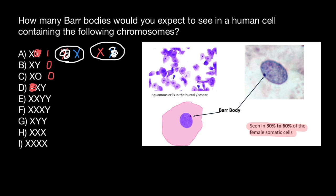Next, we see a male with two Y chromosomes and two X chromosomes (XXYY). Again, one X chromosome is going to form a Barr body, so we will see one Barr body here. The extra Y chromosome, which is also a sex chromosome, is not going to form a Barr body. It is not critical for the male organism to have one extra Y chromosome.